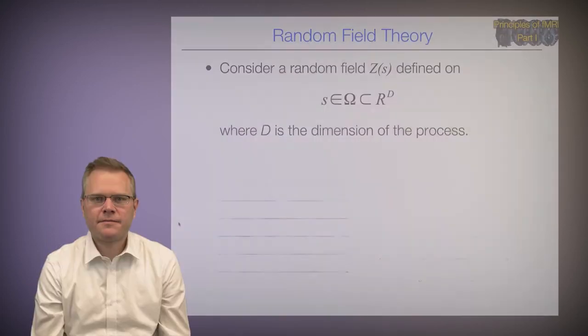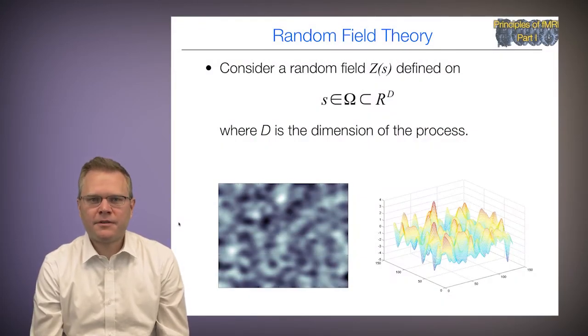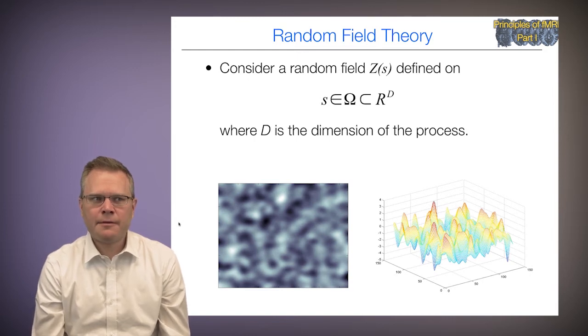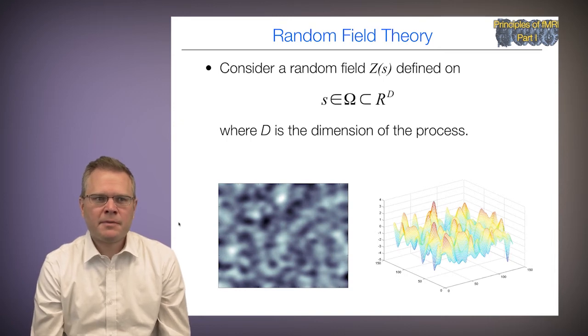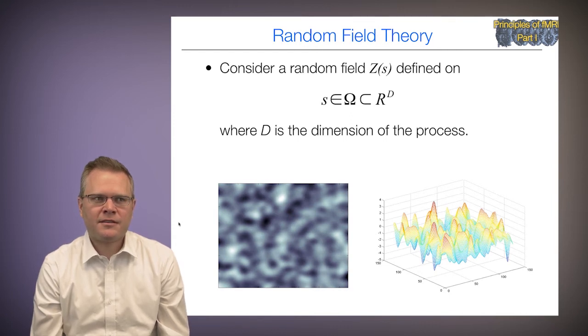In neuroimaging, we consider a statistical image — the one with all the t-statistics — to be a lattice representation of a continuous random field. Here we have a random field z(s) defined on a two-dimensional space, visualized as a heat map on the left and a mesh plot on the right, where every point in the lattice has a statistic value following a random field.